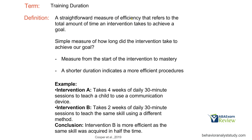Training duration is a straightforward measure of efficiency that refers to the total amount of time an intervention takes to achieve a goal. How long did the intervention take? If we need three check marks and it took 45 hours in a session, is that efficient? Maybe, maybe not — but that's duration. We measure from the start of the intervention to mastery. Shorter duration indicates a more efficient procedure. For example, four weeks of daily 30-minute sessions versus two weeks of daily 30-minute sessions to teach the same skill — Intervention B is more efficient.